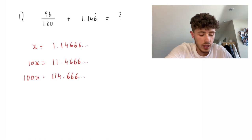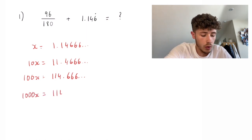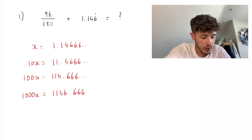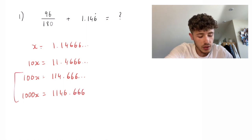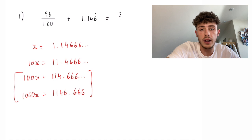Still, those decimal places are not the same just yet. So, if we go one more to 1,000, we're going to have 1146.666. As you can see, the decimal places of these two are now the same.